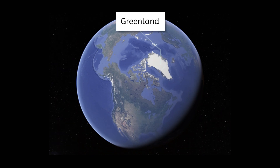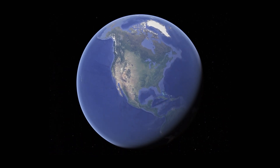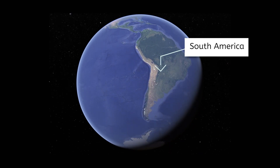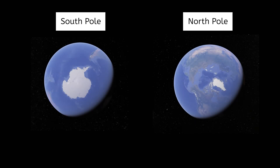But remember that Earth has two poles. To find the other, we have to go back south, all the way past South America to the South Pole. Unlike the North Pole, the South Pole is located on land — the continent of Antarctica — and consists of a large glacial ice field. These two regions represent the polar ice caps.